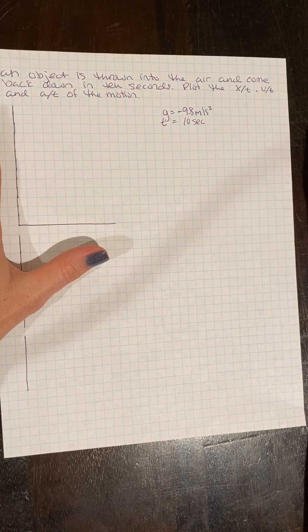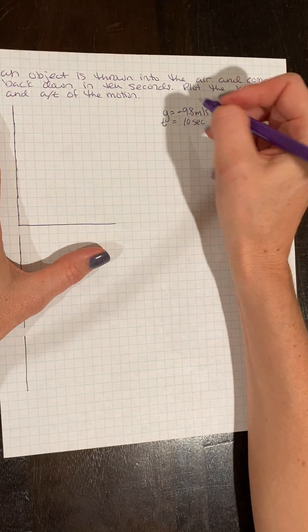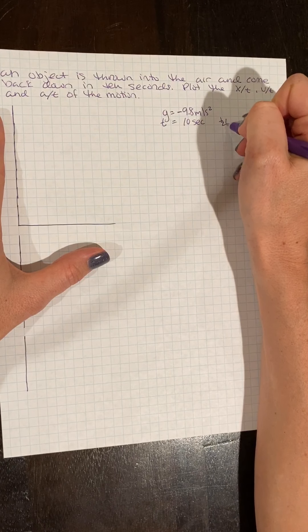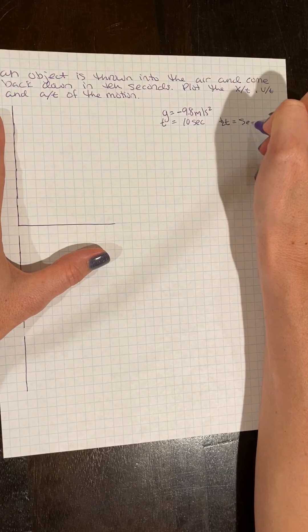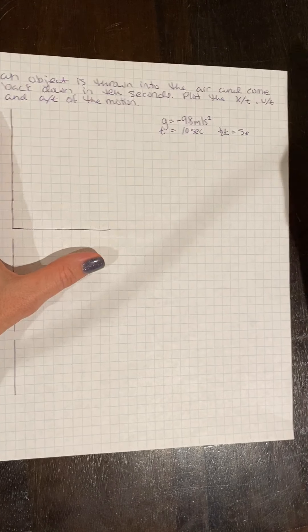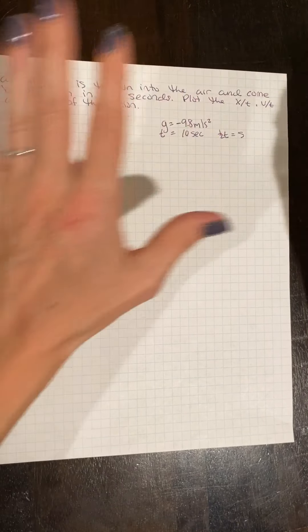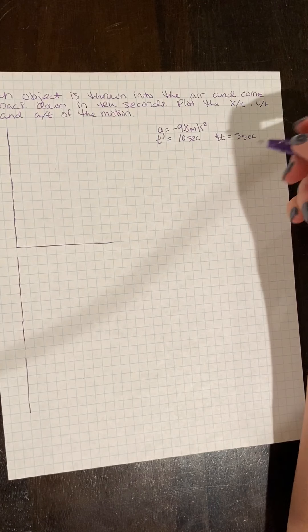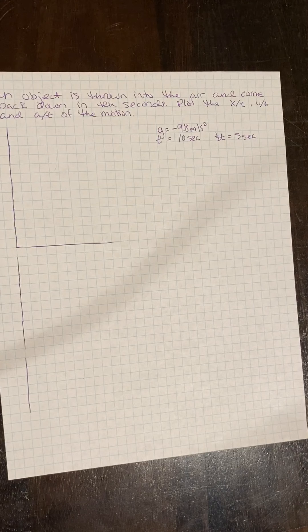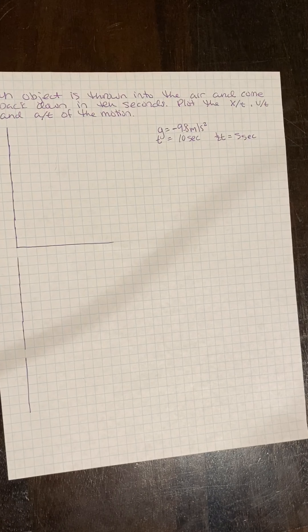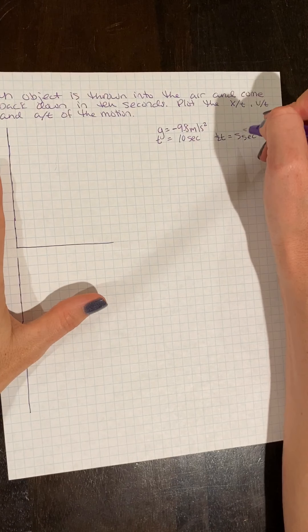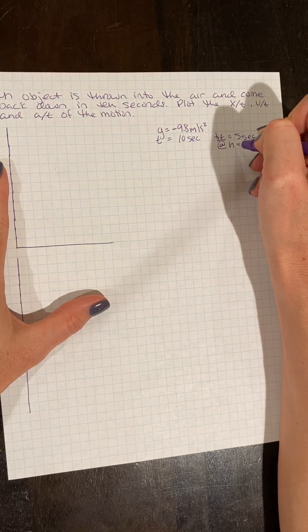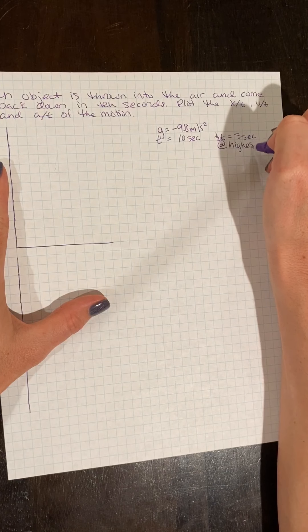But we know from yesterday's video that half my time, five seconds, is spent going up. And five seconds is spent going down. So I know that when I am at five seconds, I am at my highest point.